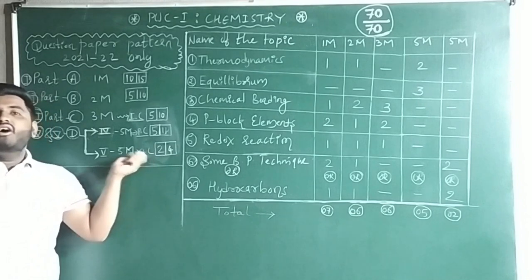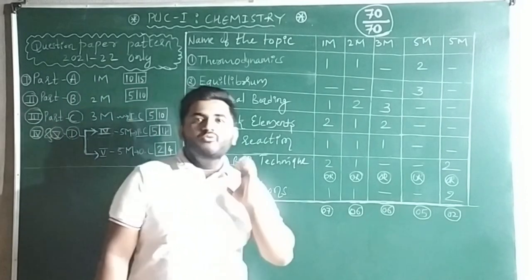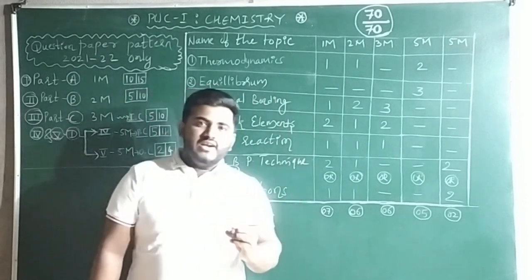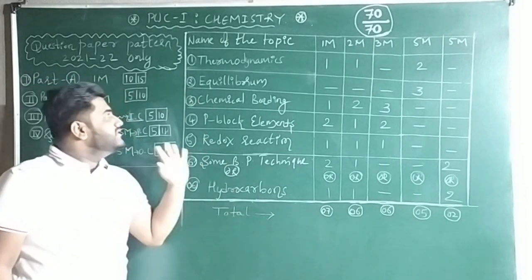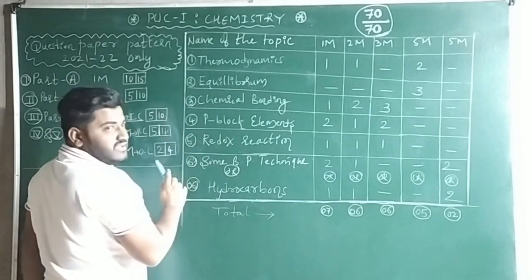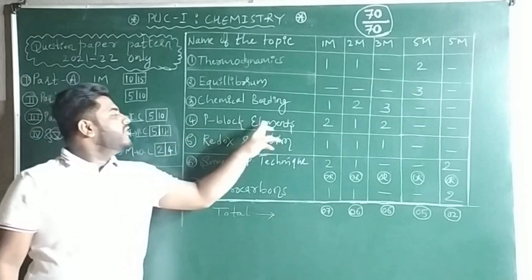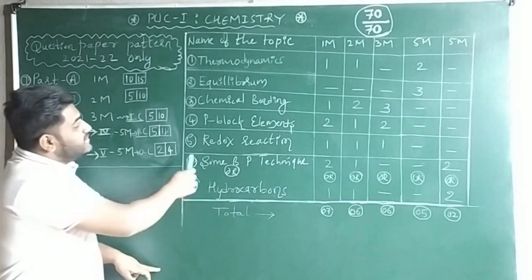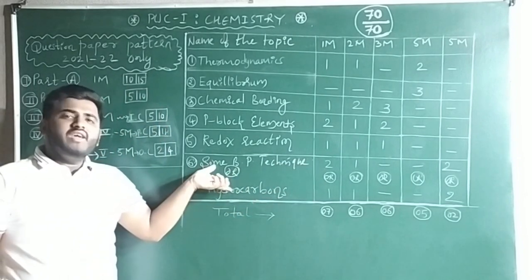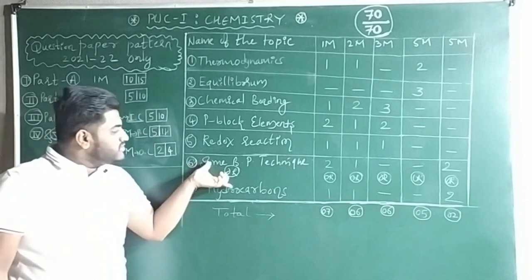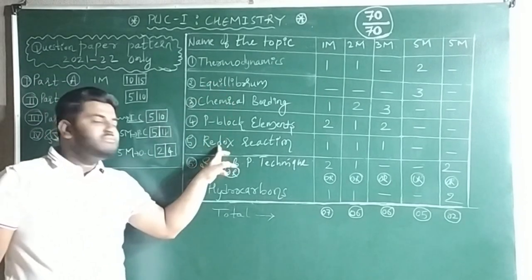Now let's see how to get 70 out of 70 by studying only six chapters. The six chapters are: Thermodynamics and Equilibrium from physical chemistry; Chemical Bonding, P-Block Elements, and Redox Reactions from inorganic chemistry; and either Some Basic Principles and Techniques of Organic Chemistry or Hydrocarbons from organic chemistry — you study whichever one you prefer.